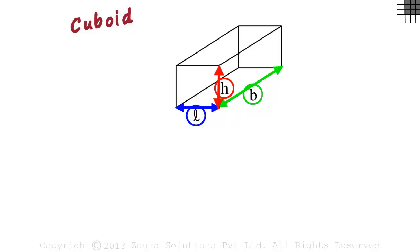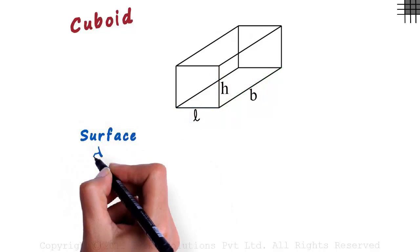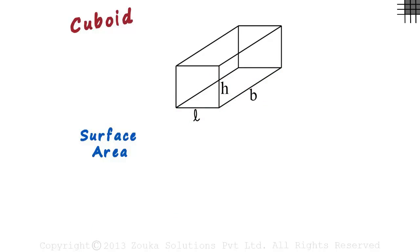We now need to understand how its surface area is calculated. Its surface area will be the sum of the areas of the six rectangles. We look at each rectangle closely.